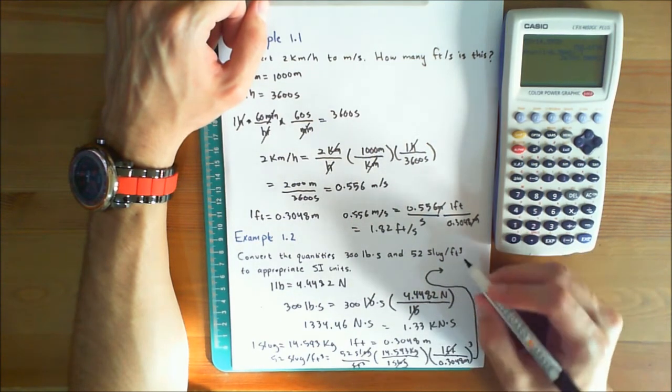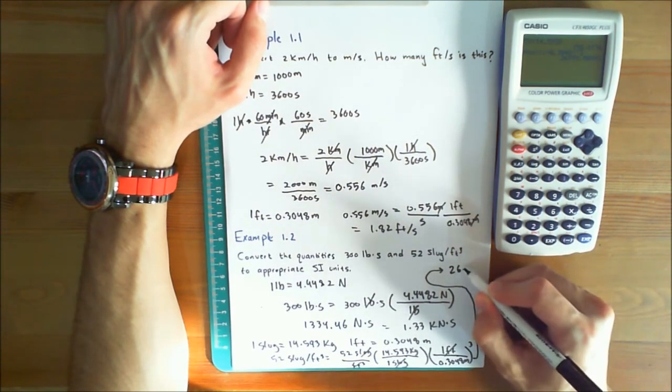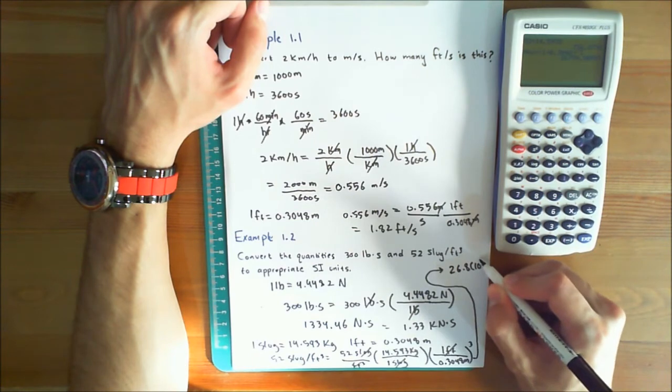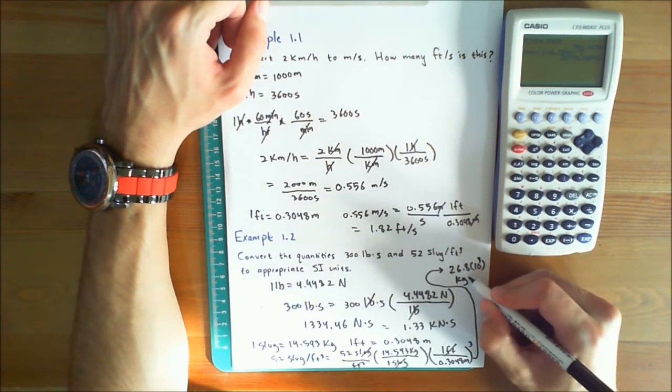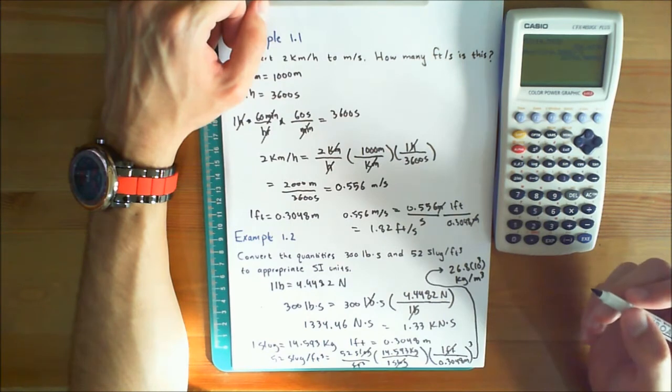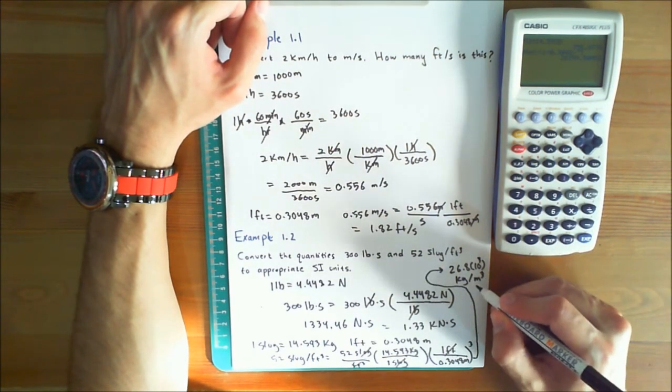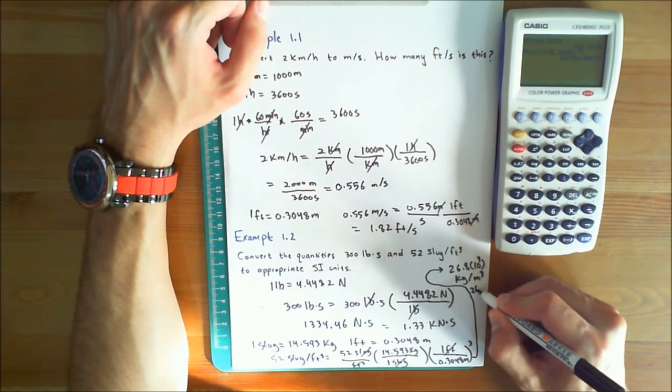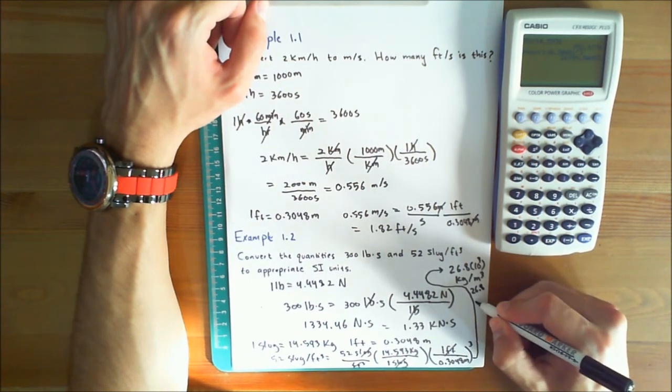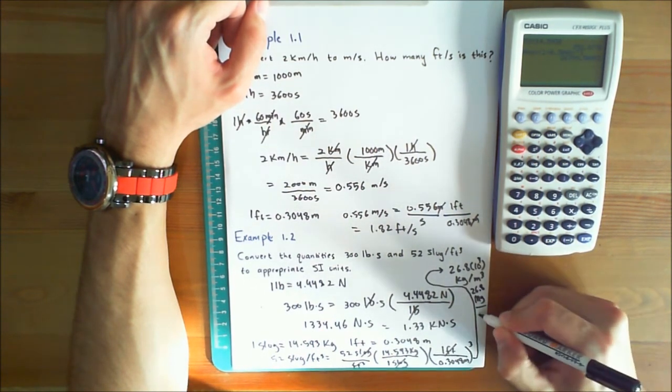And if you round that off to 3 significant figures, the answer would be 26.8 times 10 to the power 3 kilograms per meter cubed. In other words, this is equal to 26.8 megagrams per meter cubed.